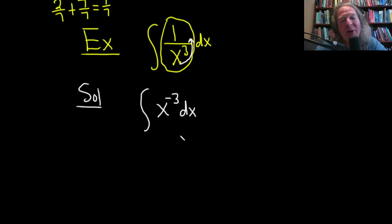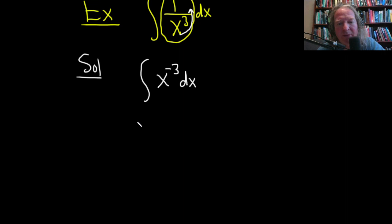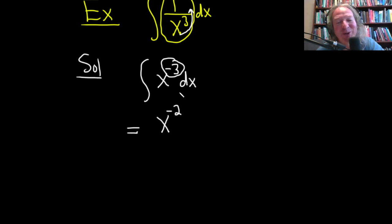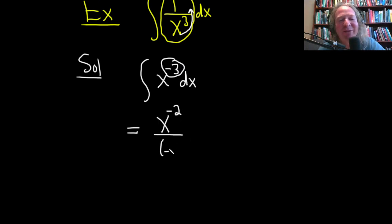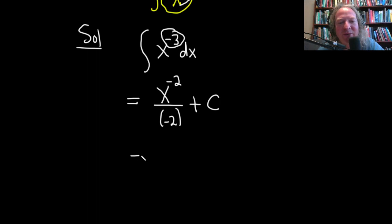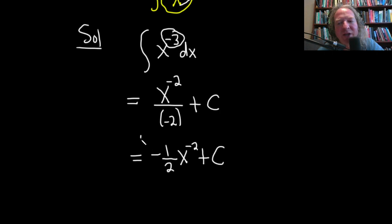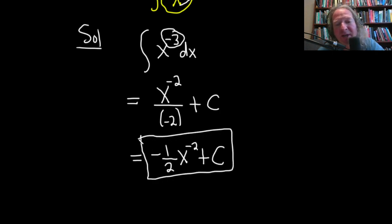Now we apply the power rule: drop the integral sign and add 1 to the exponent. Negative 3 plus 1 is negative 2, so we get x to the negative 2 divided by negative 2, plus our constant of integration. This equals negative 1/2 times x to the negative 2 plus C — that's a perfectly acceptable way to write the answer.